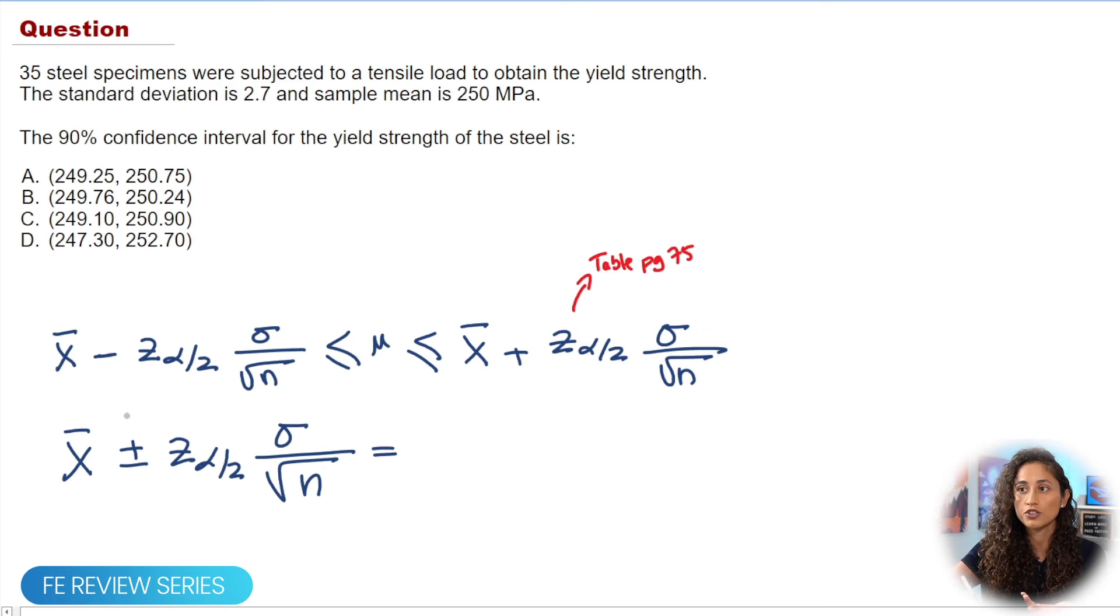So we have X bar, like we said earlier, that is the sample mean, which is 250 megapascal, and then we're going to do plus or minus. The Z value, we already grabbed it from the table on page 75, and we said it's 1.6449, and then we're going to multiply it by the standard deviation, which is 2.7, and then divide it by the square root of n, and n is the sample size, which is 35.